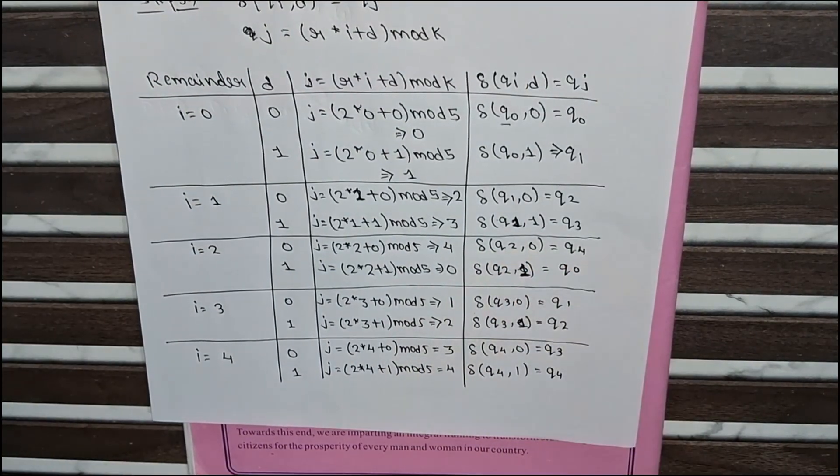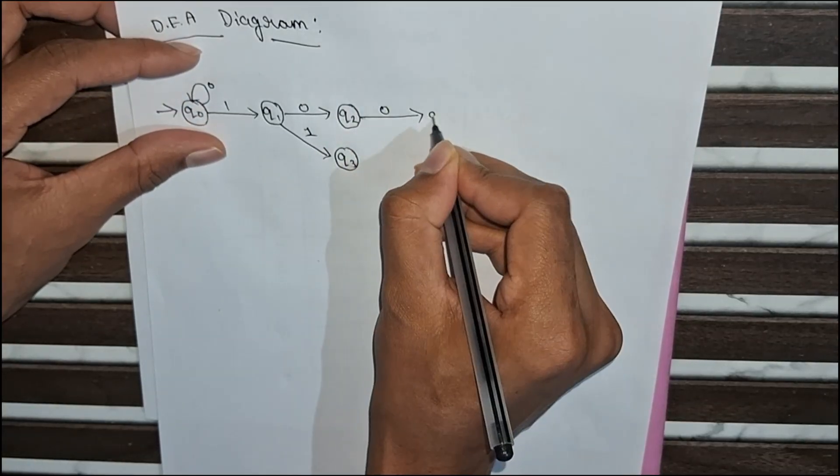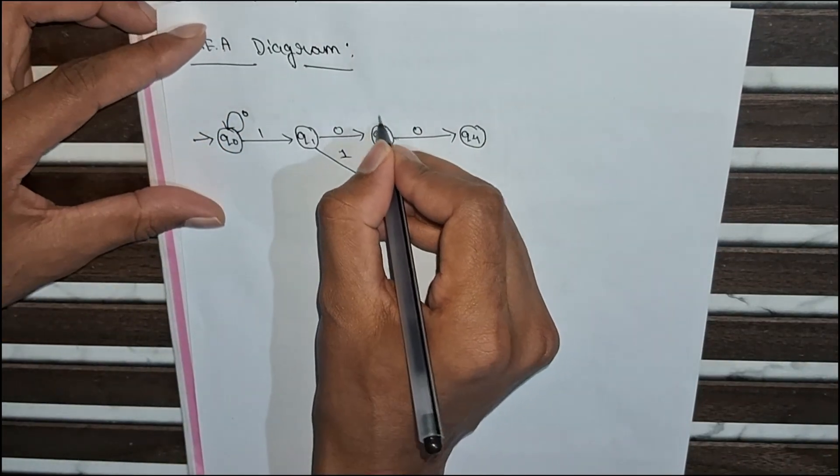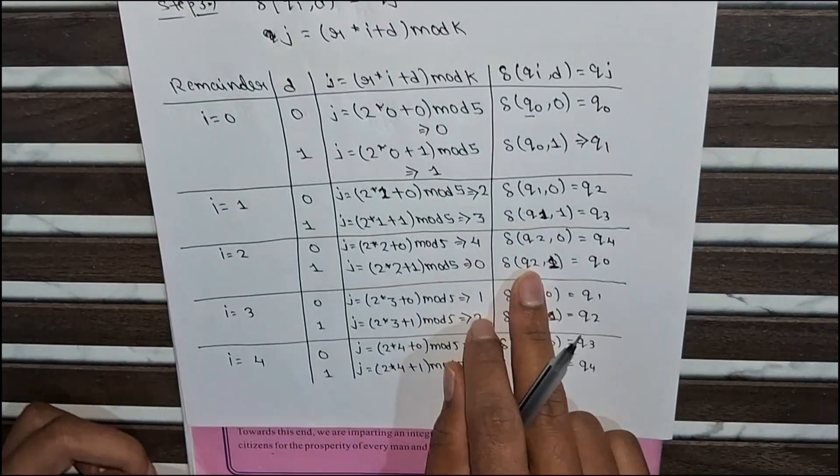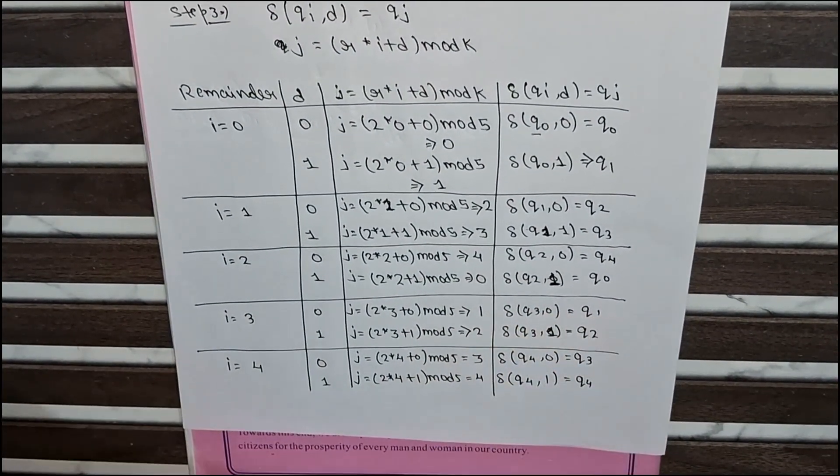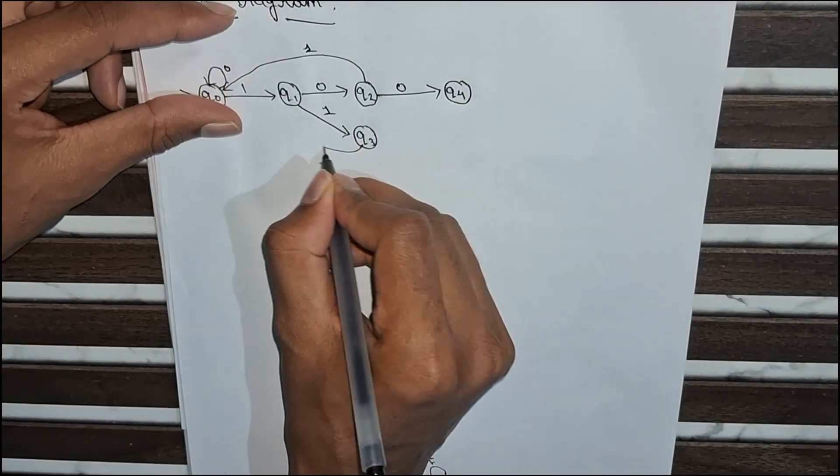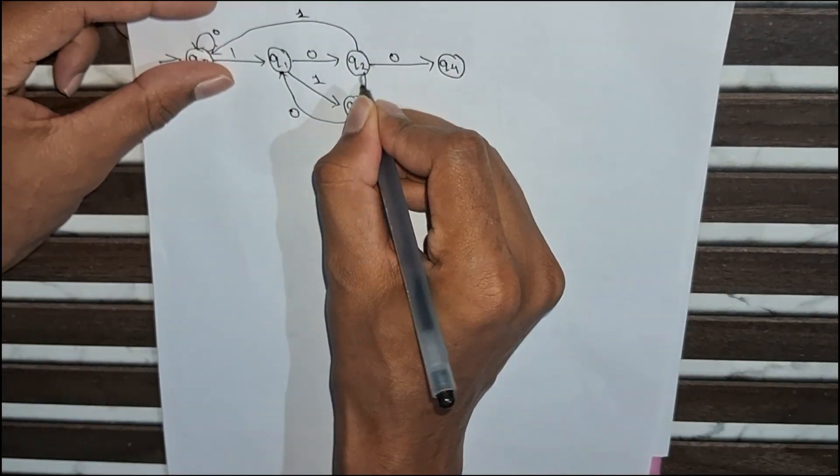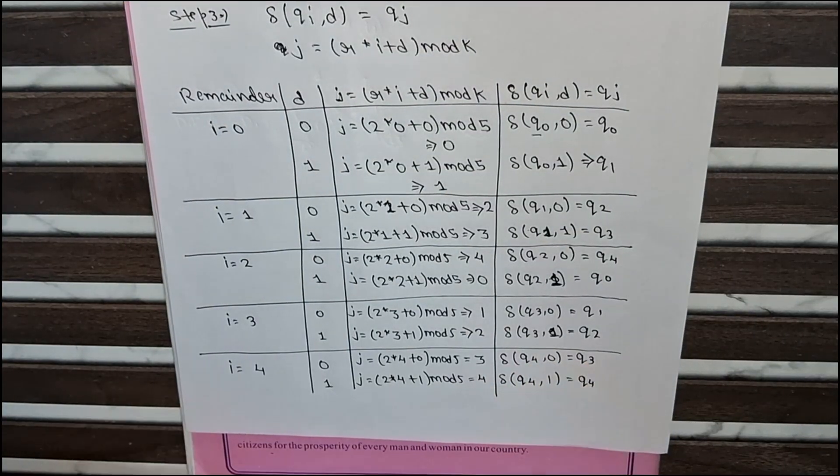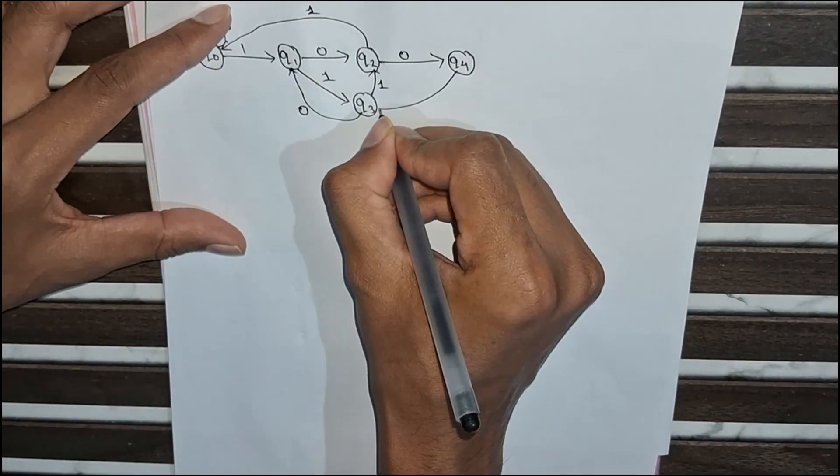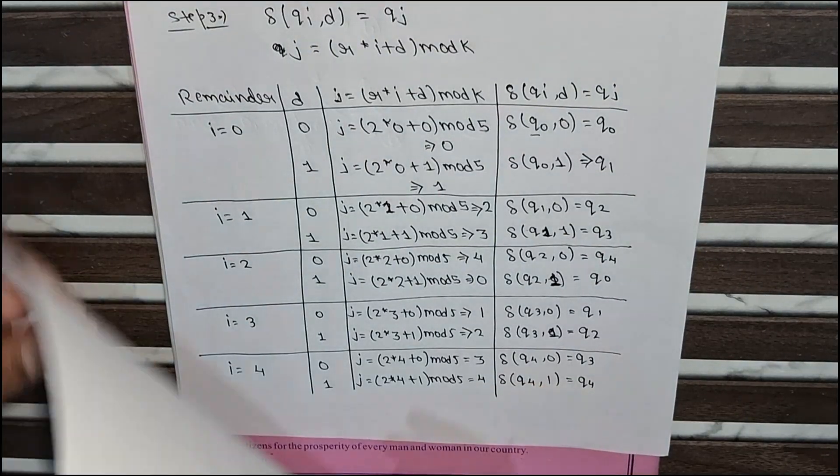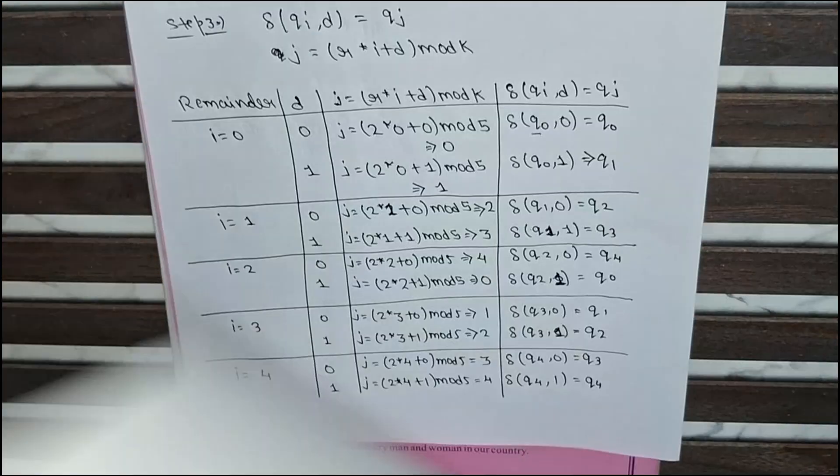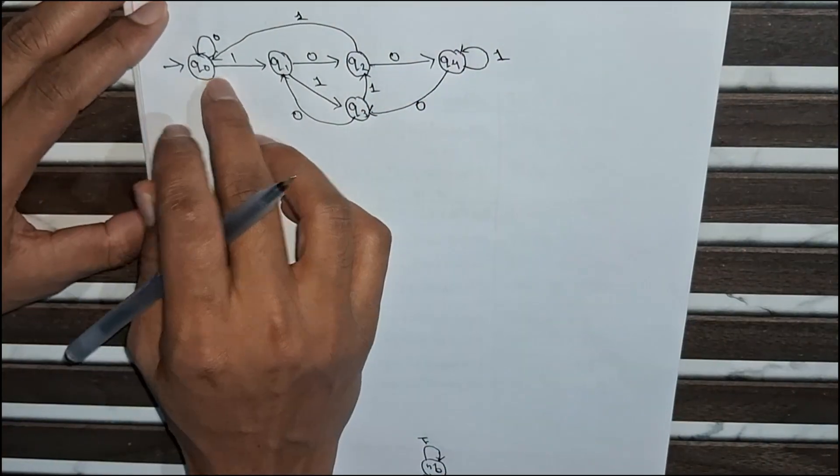Then q2 with input symbol 0 goes to q4. q2 with input symbol 1 goes to q0. Then q3 with input symbol 0 goes to q1, and q3 with input symbol 1 goes to q2. The last is q4 with input symbol 0 goes to q3, and q4 with input symbol 1 goes to q4 which is a self-loop. Like this we draw the DFA diagram with the help of this table.